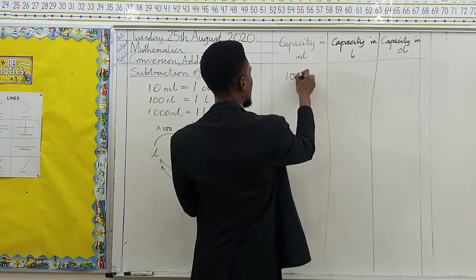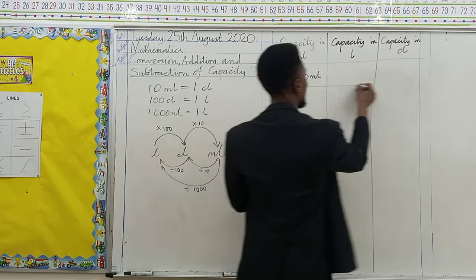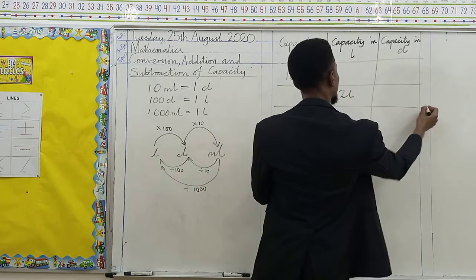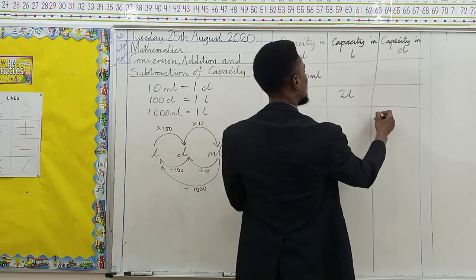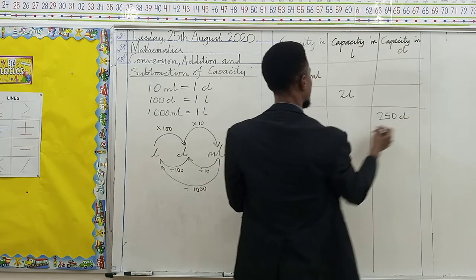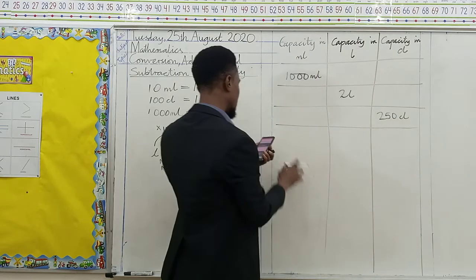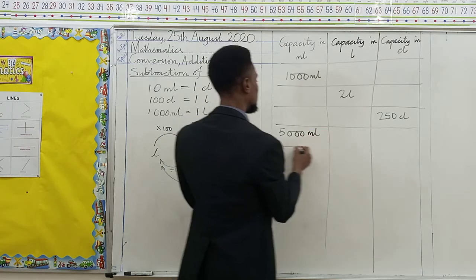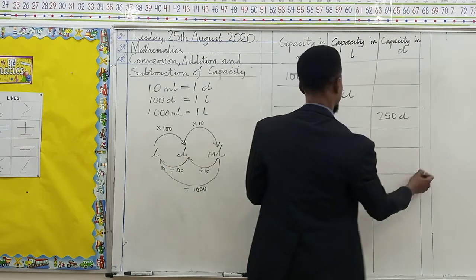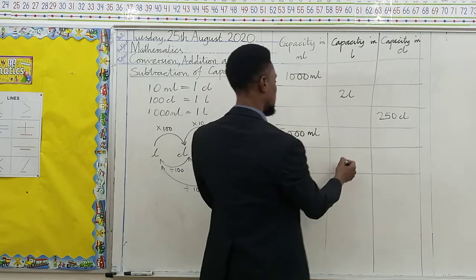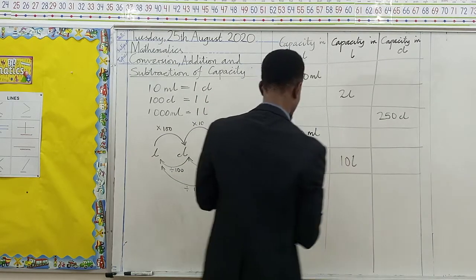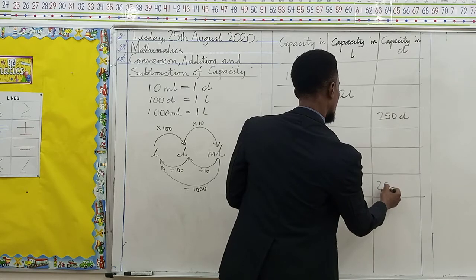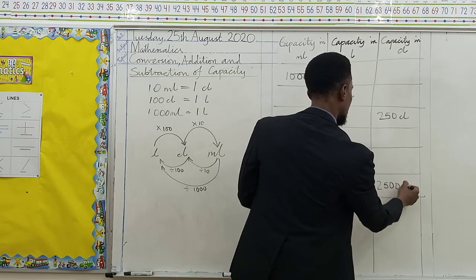We have 1,000 milliliters. And then for liters, we have 2 liters. And then for capacity in centiliters, we have 250 centiliters. Now starting again: we have 5,000 milliliters, and then for capacity in centiliters, we have 2,500 centiliters.